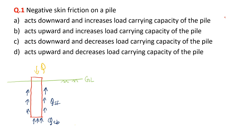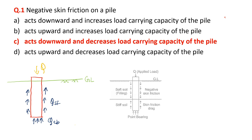The skin friction is acting in the upward direction because when load Q is acting in the downward direction, the movement or settlement of the pile will be in the downward direction, due to which friction will be developed in the opposite — that is, the upward — direction. This is the basic concept of the load bearing action of the pile. Now coming to the concept of negative skin friction, here we have another diagram.